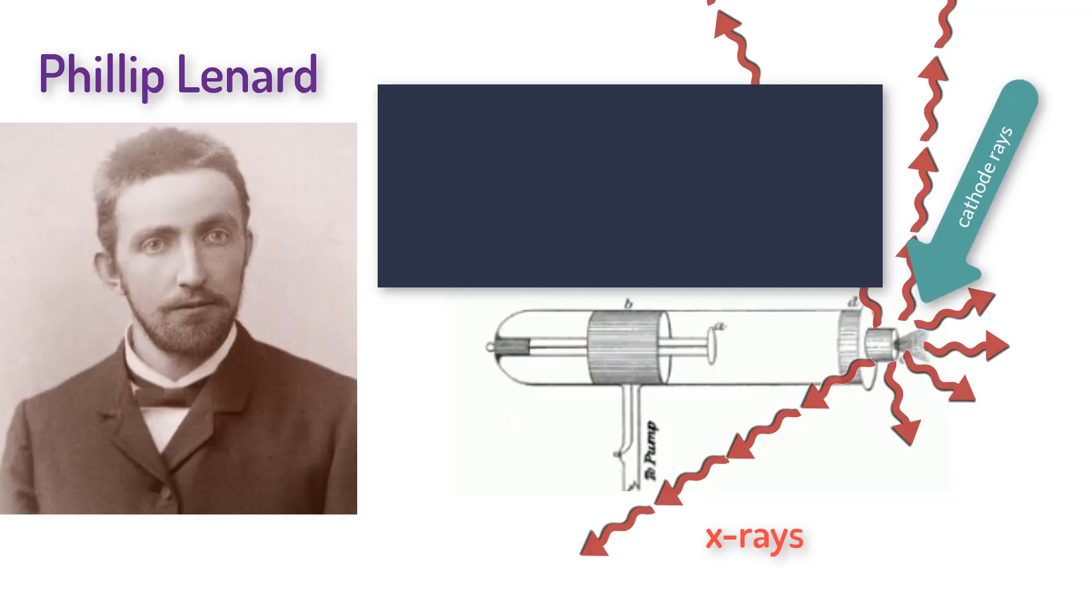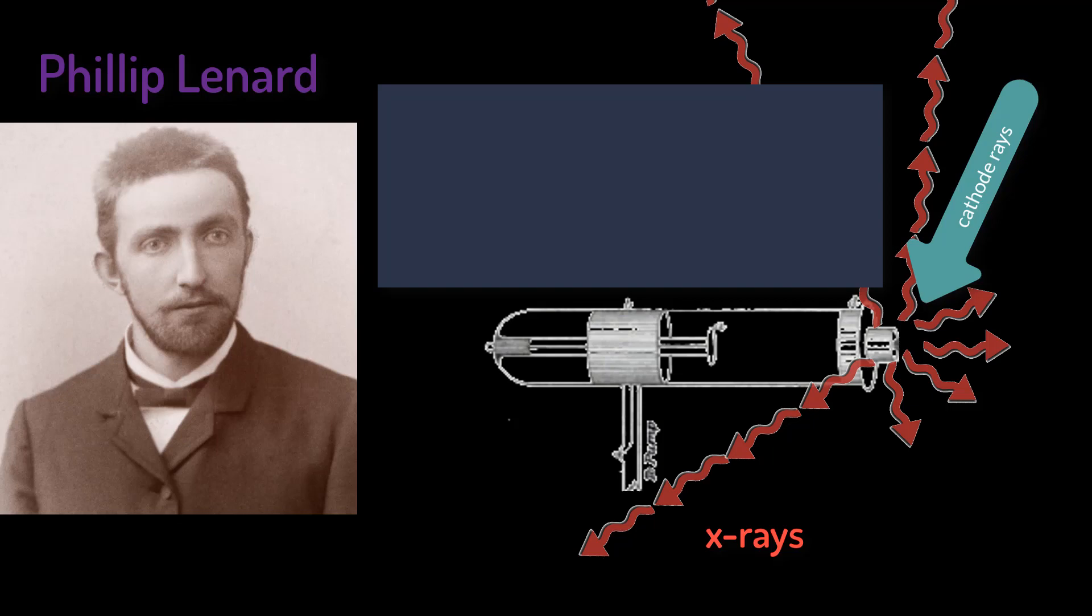In addition, it is important to note that in order to study his phosphorous screen, Leonard studied his screen in a dark room and covered the tube in light-tight cardboard. Thus, Leonard made the first cathode ray tube slash X-ray machine that you covered and studied from the outside.